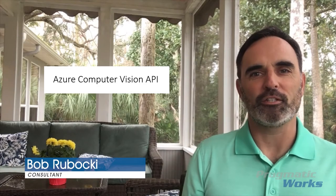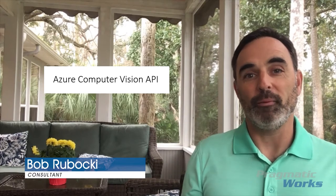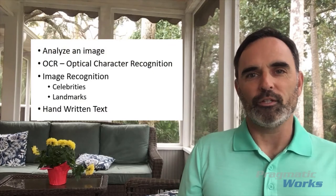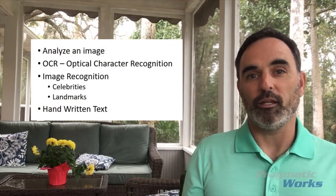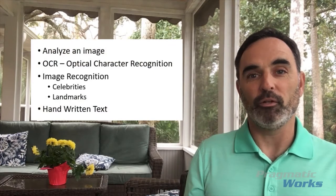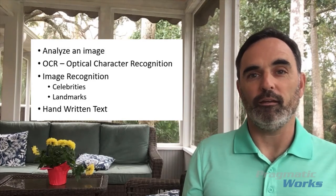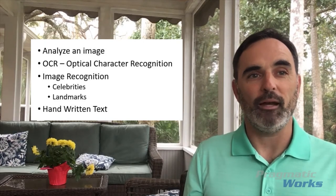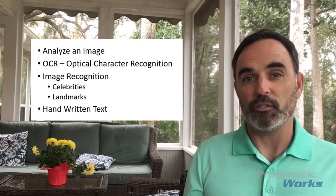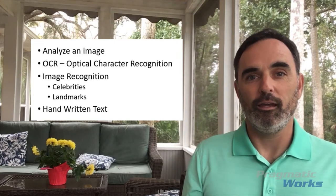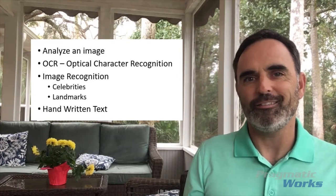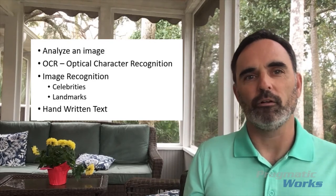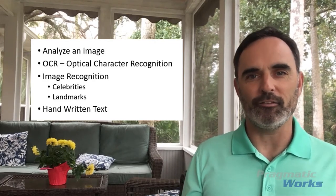This is some really powerful functionality and I wanted to show you a little bit about how it works. To begin with, here's a list of some things we can use the Computer Vision API for. One of the things we can do is analyze an image — if we provide an image to the API, it can provide a description of that image and also list out objects it sees, like people, cars, buildings, or whether it's inside or outside.